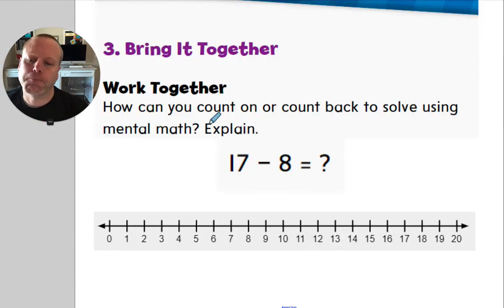So this first strategy is called using a number line. And the idea here is that you can count back or in some cases you can even count forward, count on, using a number line to subtract. So I'm going to start right here at 17. So let me start at 17. And I need to jump back 8. So 1, 2, 3, 4, 5, 6, 7, 8. So what that is, is 17 take away 8 jumps. The answer is 9.